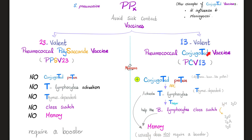That's why this strong conjugated vaccine usually does not require a booster — because you make memory cells, and in most cases they last for life.